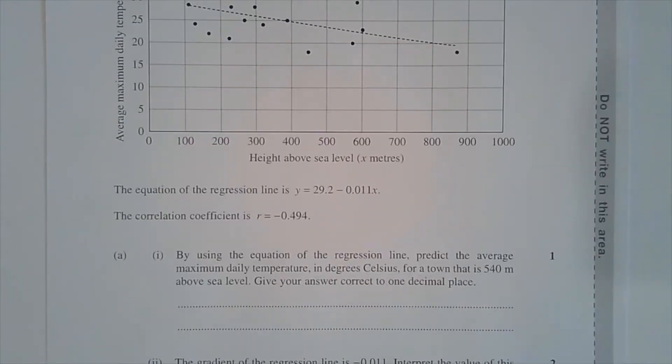Part a, i. By using the equation of the regression line, predict the average maximum daily temperature in degrees Celsius for a town that is 540 metres above sea level. Give your answer correct to one decimal place.